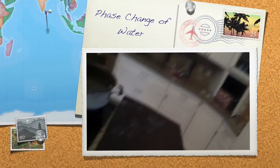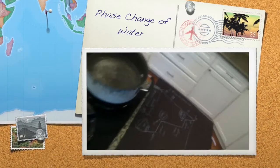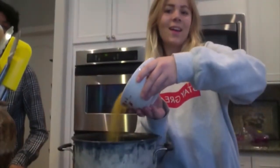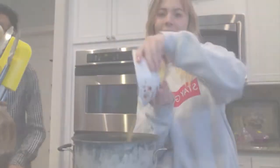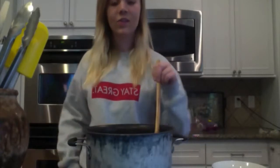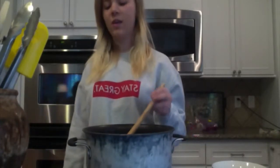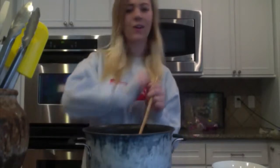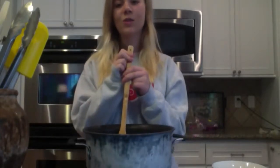Here is the almost boiling pot of water showing the phase change. Now the phase change of water is complete and all the hydrogen bond forces have been successfully broken, so we pour in the noodles into the water. Next, we need to stir the noodles to ensure all of them are cooked evenly. To do this, we're using a wooden spoon because it is an insulator, so our hands will not get too warm.